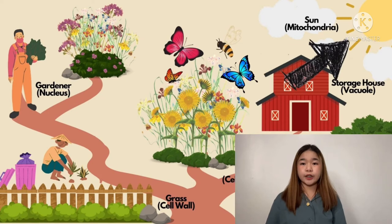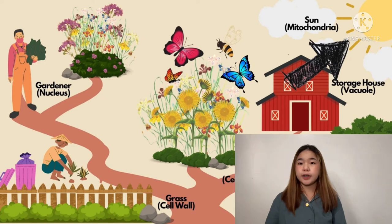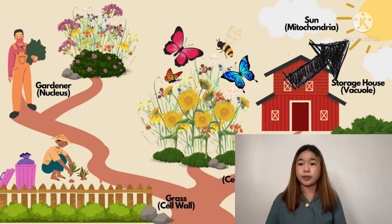The sun produces energy for the plants to survive. It is the main source of energy for the flowers. Just like the sun, the mitochondria is the powerhouse of the cell. It is the main source of energy, which is adenosine triphosphate, or ATP.